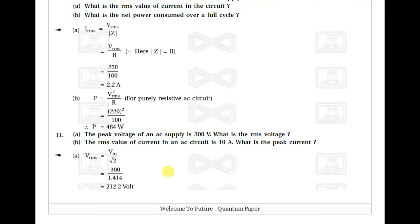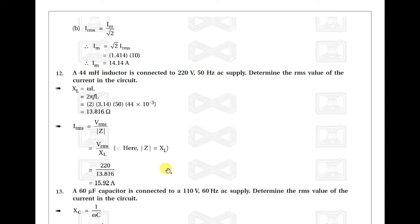Example eleven: the peak voltage of an AC supply is 300 volt. Vrms = Vm / √2 = 300 / 1.414 = 212.2 volt. Also, if the RMS current is 10 ampere, the peak current Im = √2 × Irms = 10 × 1.414 = 14.14 ampere.